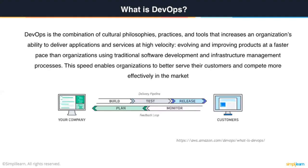Essentially, you try to get a pipeline wherein you have a build, test, and release pipeline, and then you monitor your customers, their behavior, and plan accordingly for the next set of enhancements and bug fixes. So this is a continuous process — it goes on and on.